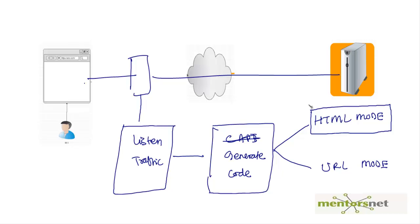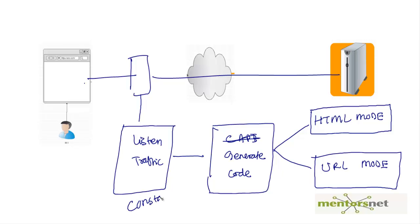By default, VUgen generates in HTML mode. However, sometimes we need to move to URL mode. In this video my goal is to explain HTML mode and URL mode and give you an idea of how they differ. Remember, the traffic that is listened to is constant.